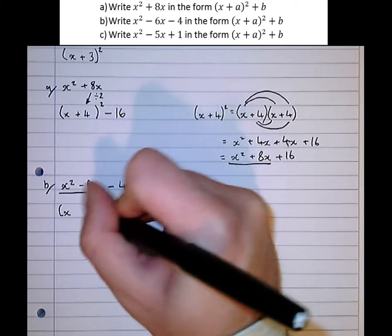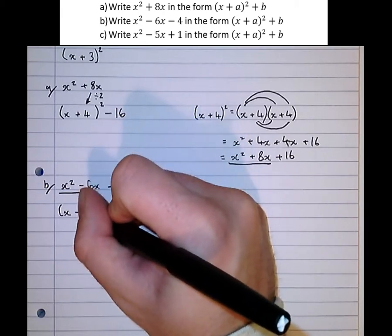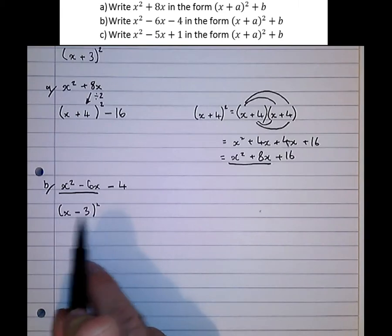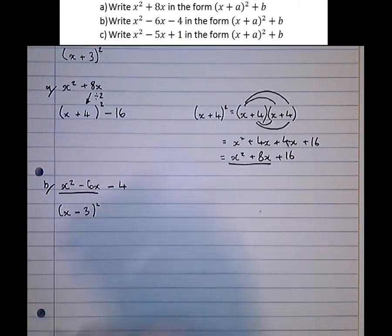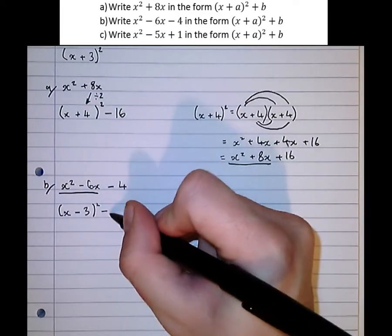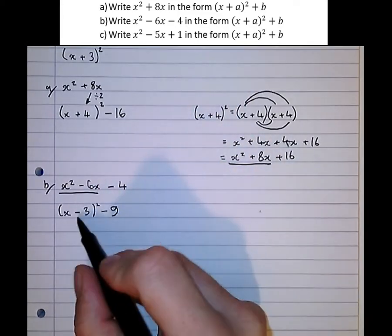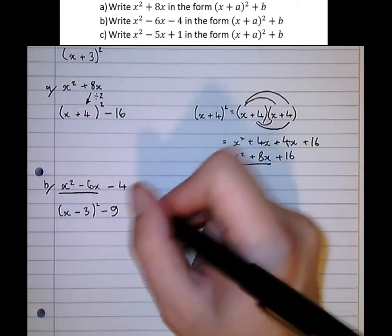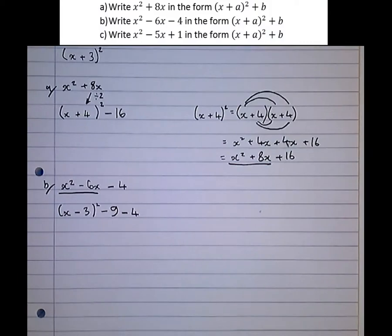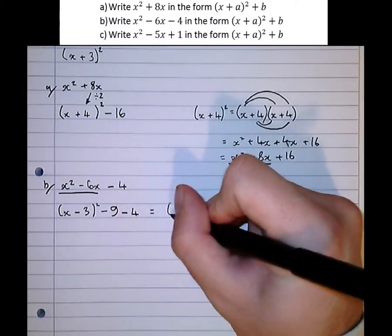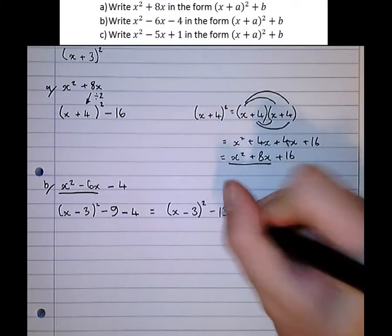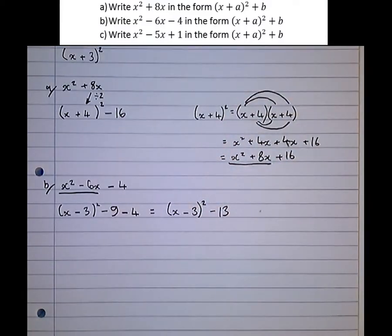So remember the number in the bracket is always half of this number here, so x minus 3. So when we multiply this bracket out we're going to get x² - 6x, but because of this minus 3 being squared there's going to be an extra plus 9. So we take that away, take the square of this number away, that adjusts for that. And then now remember we've also got a minus 4 on the end. Simplifying it we get x minus 3 squared minus 13. That's the answer to that one.